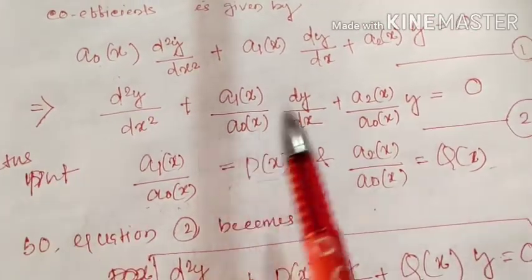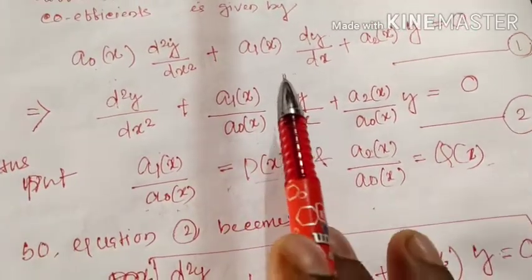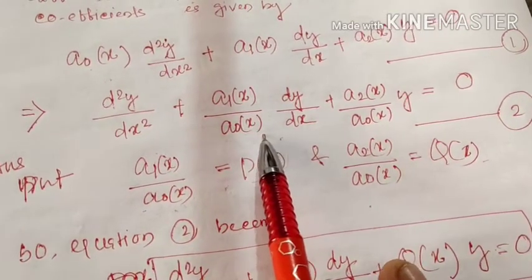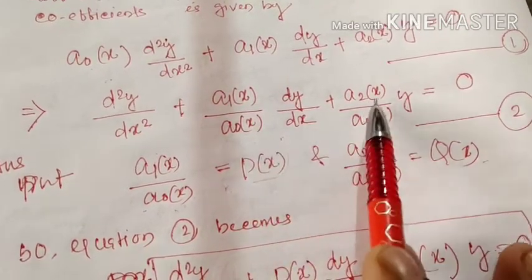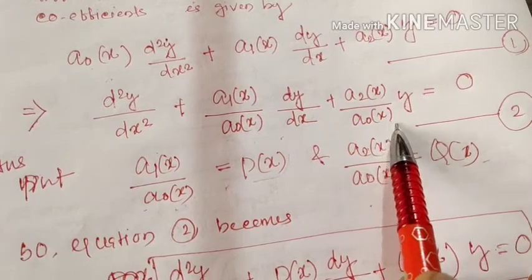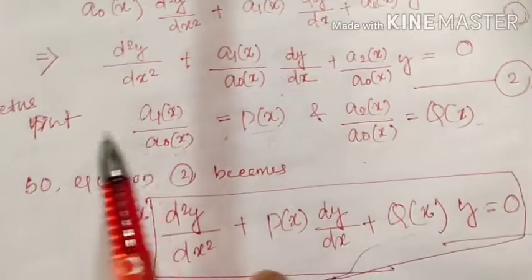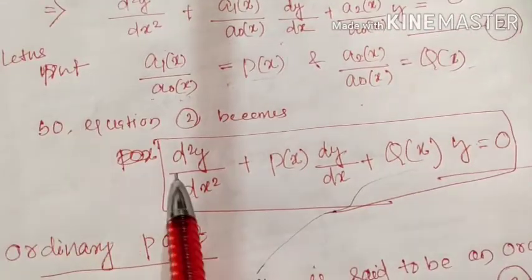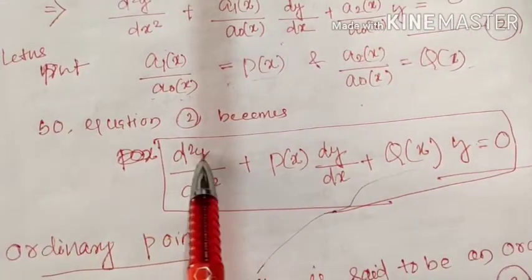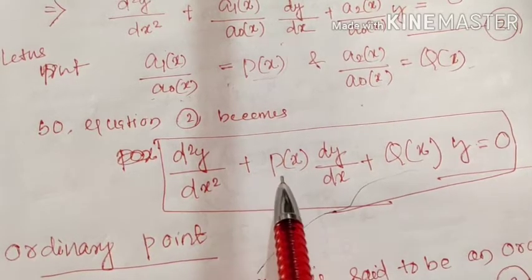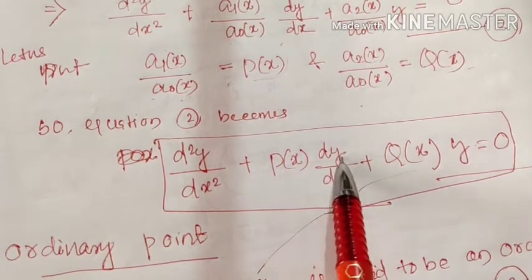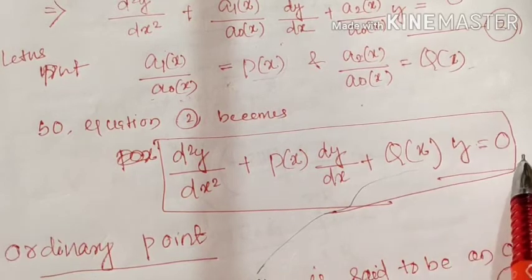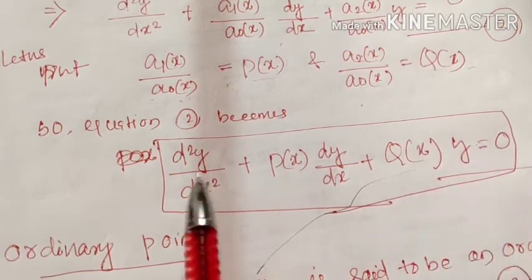Now let us put a₁(x)/a₀(x) = p(x) and a₂(x)/a₀(x) = q(x). So equation 2 is given by d²y/dx² + p(x) · dy/dx + q(x) · y = 0.